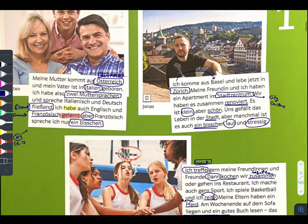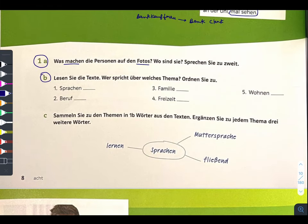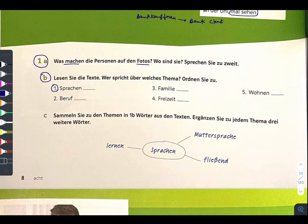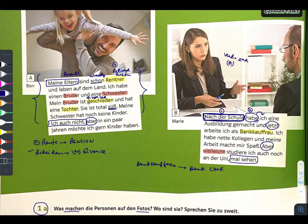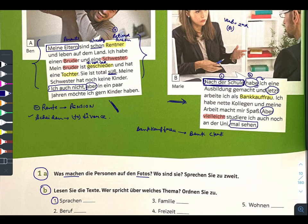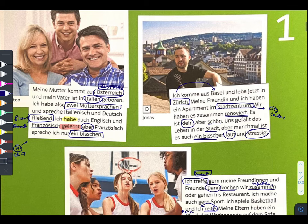Now exercise 1b: 'Lesen Sie die Texte. Wer spricht über welches Thema?' We need to read the texts and see who speaks about which theme. The first theme is Sprachen — languages. Who in the text talks about Sprachen? From the pictures, picture C was talking about languages — what he can speak, his mother from Austria, his father Italian, and he also knows a bit of French.